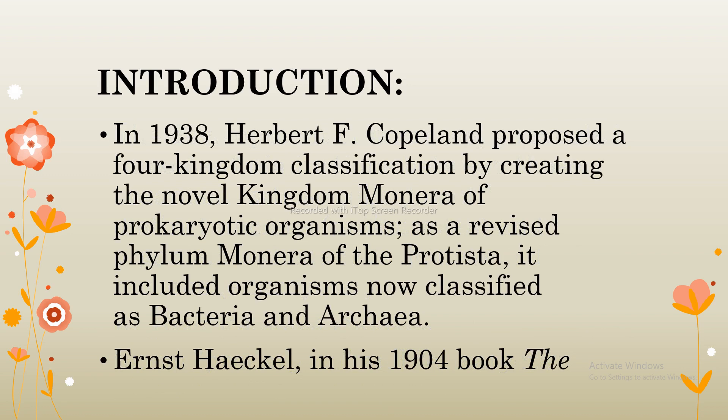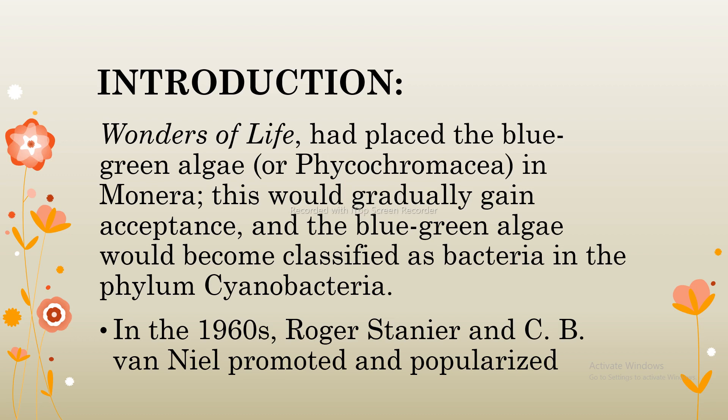In 1938, Herbert F. Copeland proposed a four-kingdom classification by creating the novel kingdom Monera for prokaryotic organisms, as a revised phylum of the Protista. It included organisms now classified as bacteria and archaea. Ernst Haeckel, in his 1904 book called 'The Wonders of Life', had placed the blue-green algae — also called Phycochromaceae — in Monera. This gradually gained acceptance, and blue-green algae became classified as bacteria in the phylum Cyanobacteria.